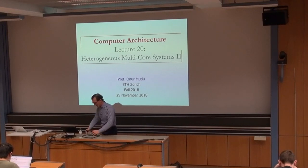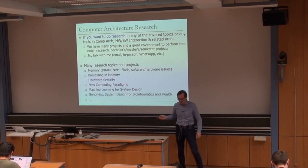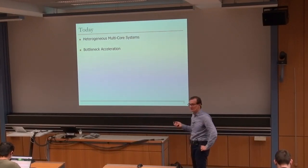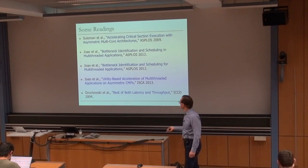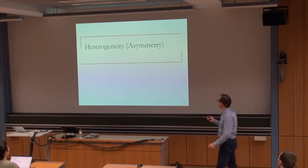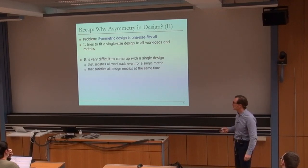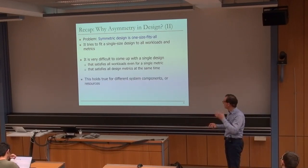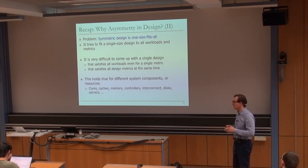We're going to continue on heterogeneous multicore. I motivated heterogeneous yesterday in multiple ways. We're going to hopefully cover heterogeneous multicore and bottleneck acceleration today. We were talking about heterogeneity and asymmetry - why do we want this? Because symmetric design is one size fits all, and it's very difficult to come up with a single design that satisfies all workloads, all parts of a workload, even for a single metric.